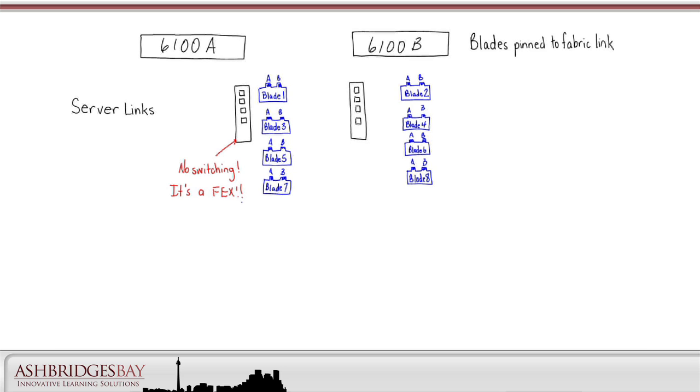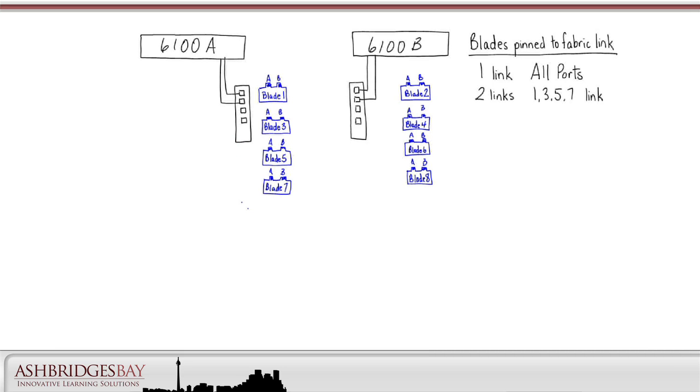If we have one server link on each IOM, then all of the blades are pinned to that link. If we have two server links, then blades 1, 3, 5, and 7 are pinned to link 1, and blades 2, 4, 6, and 8 are pinned to link 2.